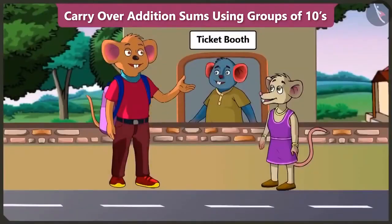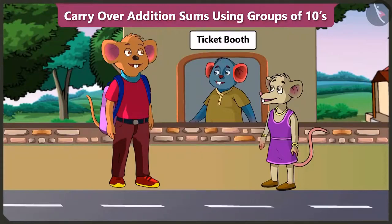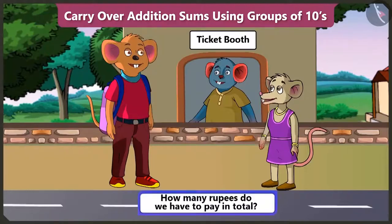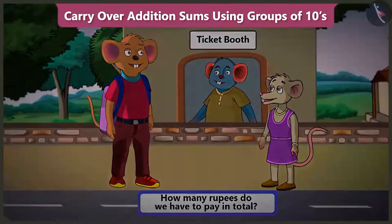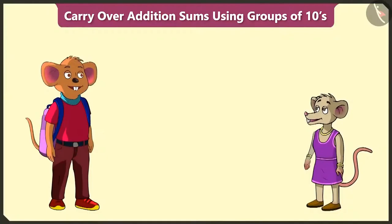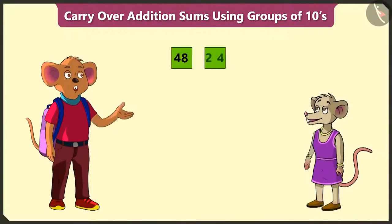Please give us two tickets to the zoo. You are older, so your ticket will be 48 rupees, and for this child, the ticket will be 24 rupees. So Choo Choo, how many rupees do we have to pay in total? For this, we have to add 24 to 48.